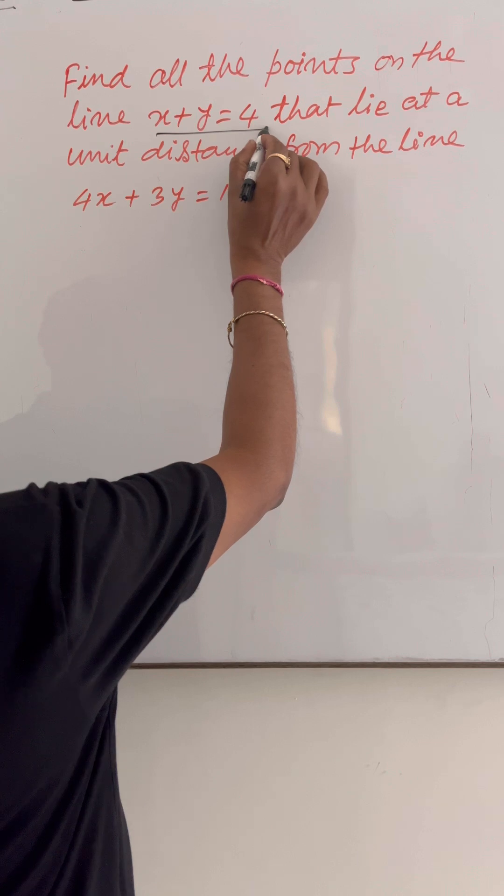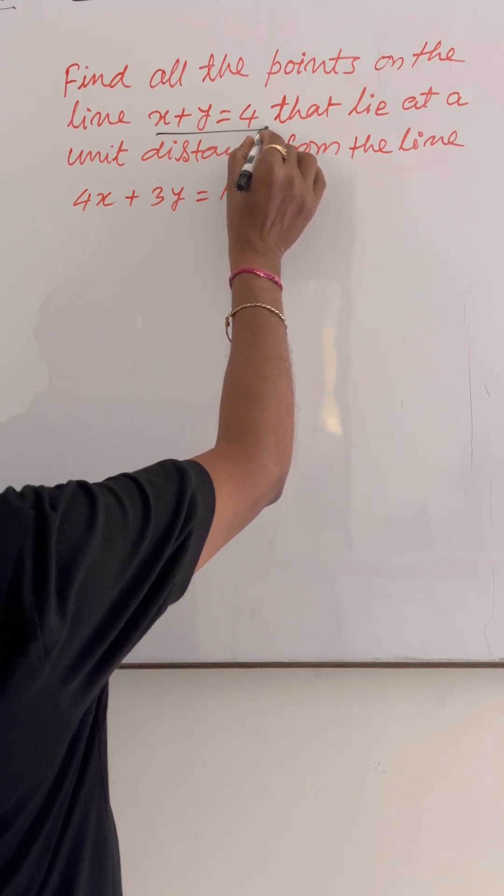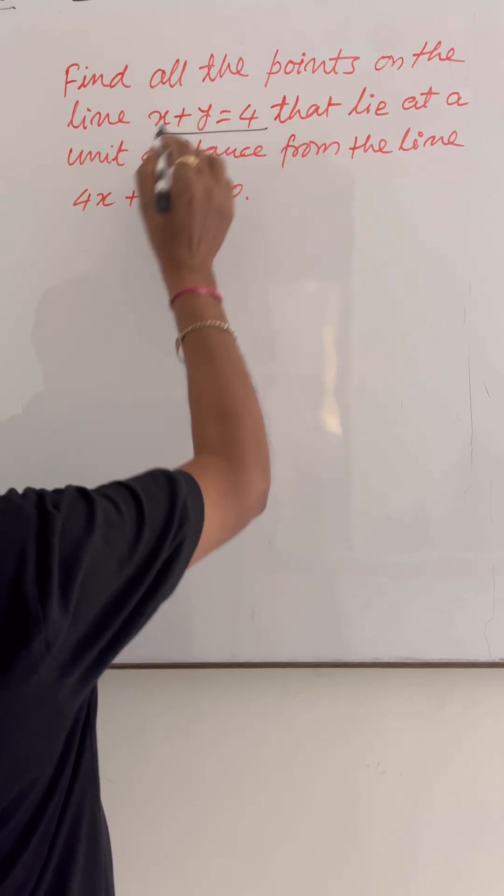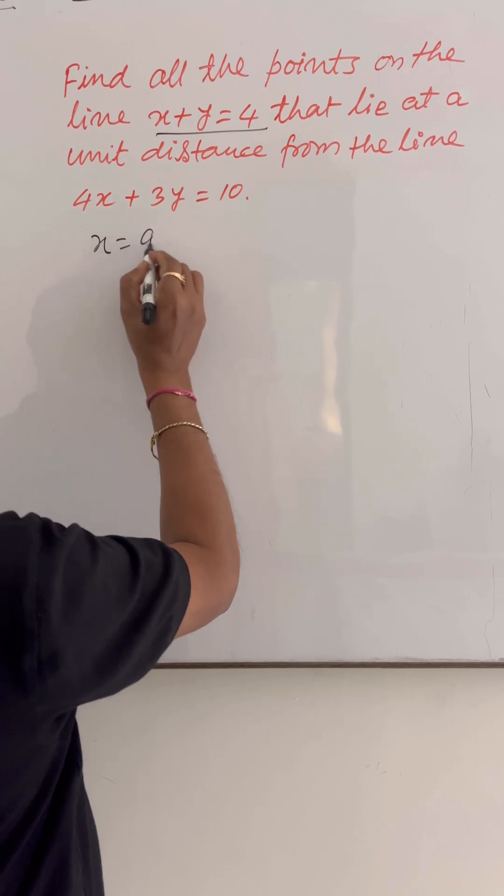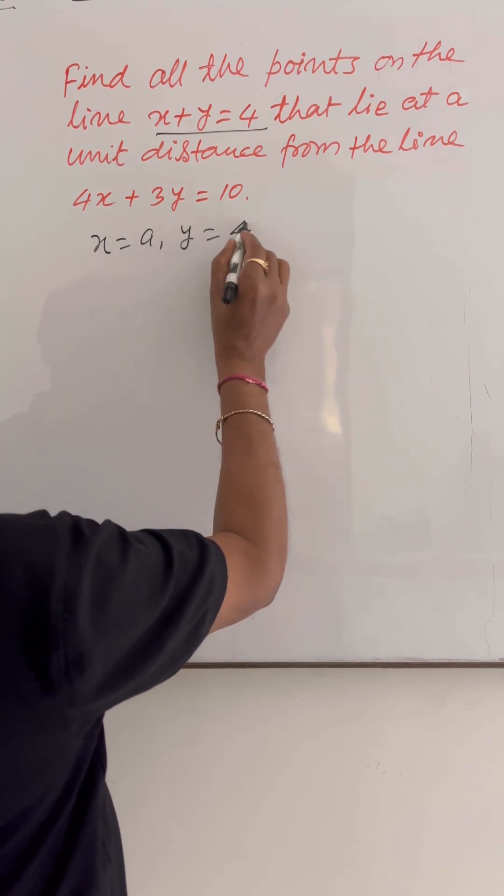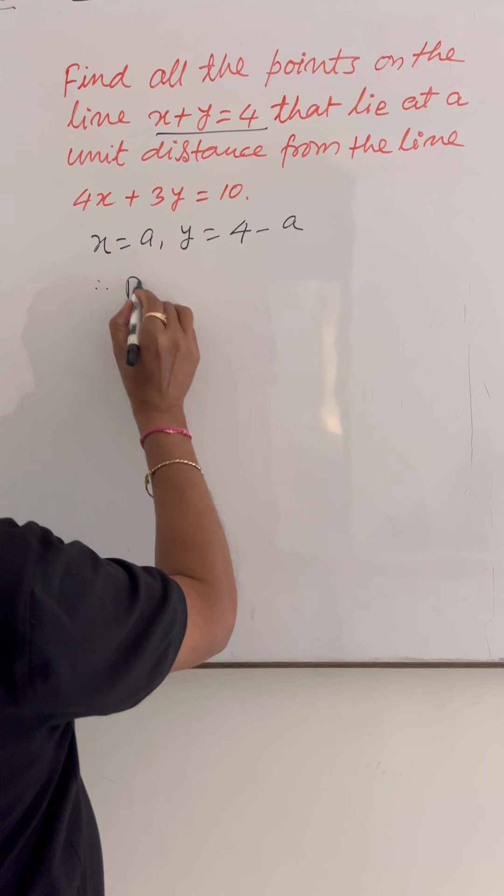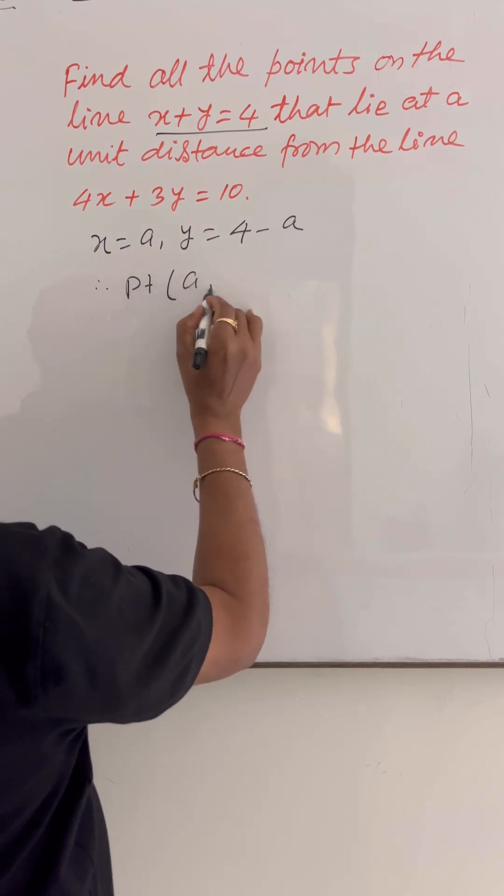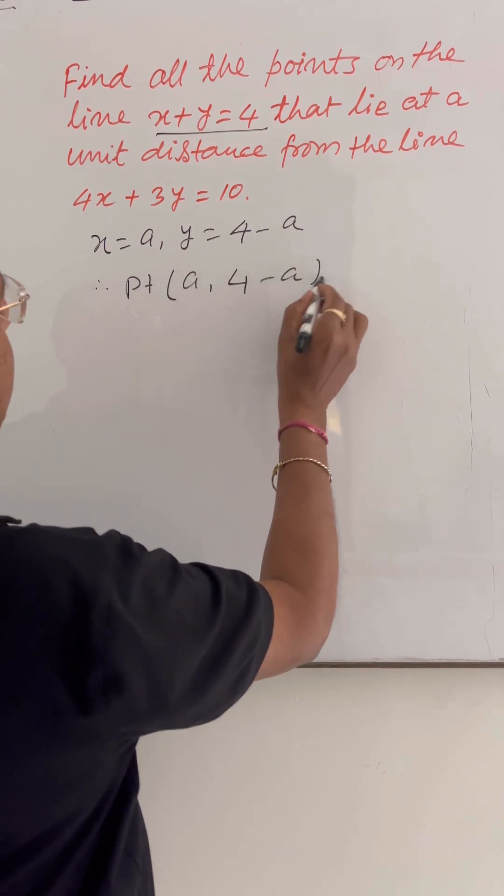Using this equation, let us suppose that x coordinate of the point is a, means x is equal to a. So, y is equal to 4 minus a. Therefore, the point has coordinates a and 4 minus a.